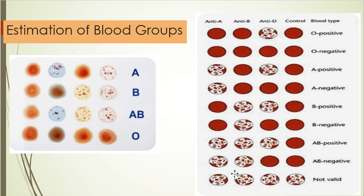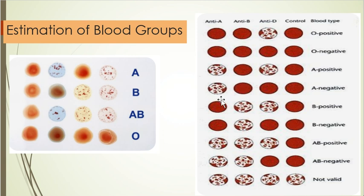To summarize blood group determination: no agglutination in anti-A, anti-B, but agglutination in anti-D means O positive; no agglutination in anti-A, anti-B, and anti-D means O negative; agglutination in anti-A and anti-D means A positive; agglutination only in anti-A means A negative; agglutination in anti-B and anti-D means B positive; agglutination in anti-B only means B negative; agglutination in anti-A, anti-B, and anti-D means AB positive; agglutination in anti-A and anti-B only means AB negative. If agglutination occurs in all wells including control, the result is invalid due to error.